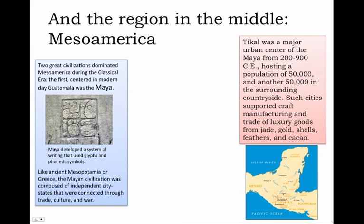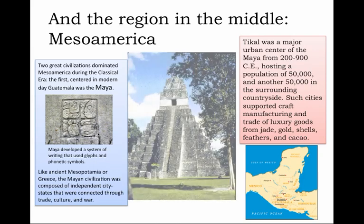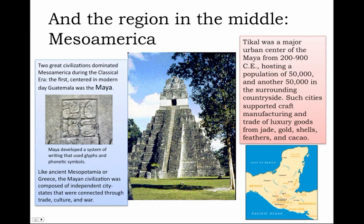The Maya were city builders, and Tikal was a major urban center from roughly 200 to 900 CE, hosting a population of 50,000 in the urban core, with another 50,000 in the surrounding countryside where peasant farmers produced food for the urban masses. Such cities supported craft manufacturing and trade in luxury goods — carved from jade, molded from gold, ornamented with shells and beautiful Quetzal plumes from exotic birds — not to mention the tasty treat from the cacao bean, the essential ingredient in chocolate.